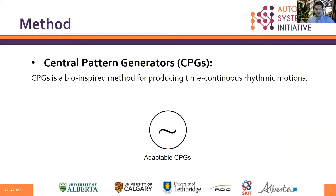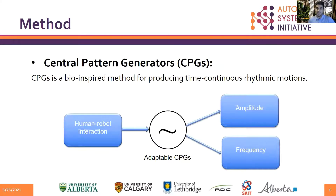The central pattern generator (CPG) is used to adjust gait parameters of the exoskeleton in order to provide compatibility with the user's gait pattern. CPGs are a set of differential equations that can produce time-continuous rhythmic trajectories of motion. In this project, an adaptable CPG is developed that uses human-robot interaction torque as input and adjusts the amplitude and frequency of gait based on that. Therefore, the exoskeleton can adapt to the user's gait by monitoring the interaction torque.